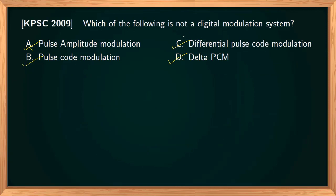In this question, we have to find the modulation scheme that is not a digital modulation system. Pulse amplitude modulation is the only analog modulation system, where the amplitude of the pulse is varied in proportion with the instantaneous amplitude of the modulating signal. In pulse code modulation, analog signals are sampled, quantized, and encoded to get a digital output. Differential PCM and delta PCM are also digital modulation systems. So the only analog modulation scheme is pulse amplitude modulation.